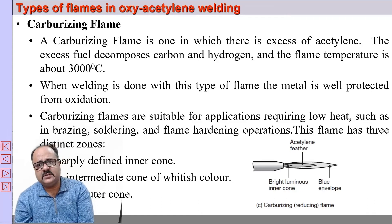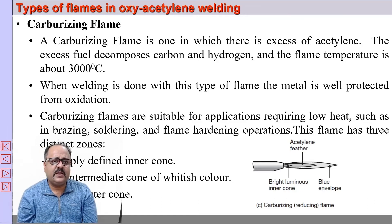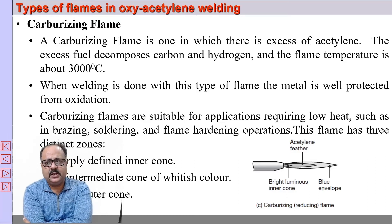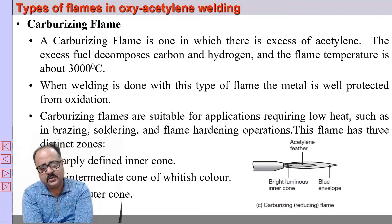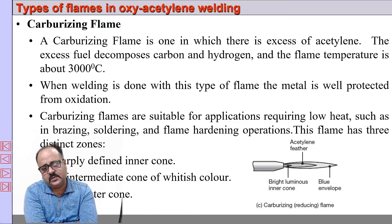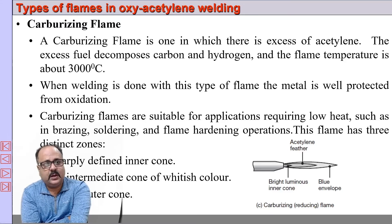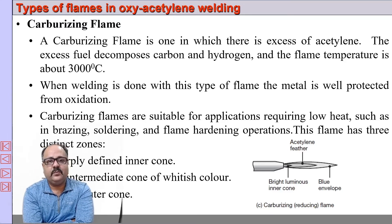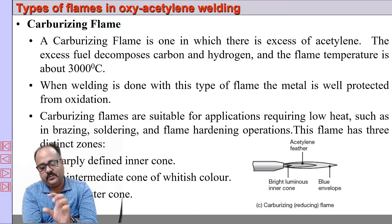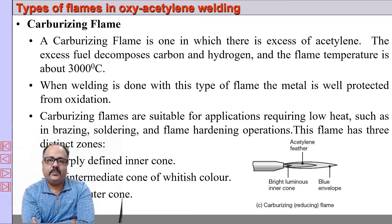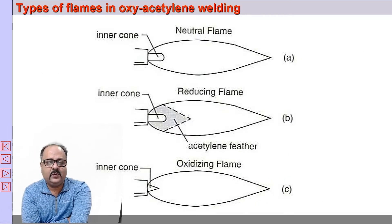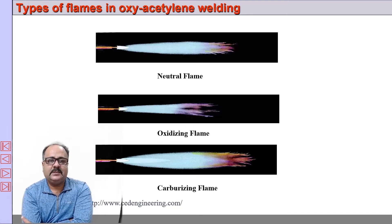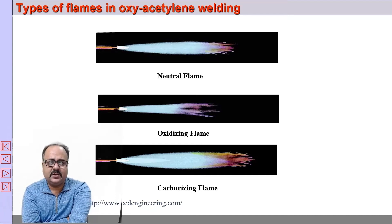If the acetylene percentage is more, the flame is called a carburizing flame. The temperature is around 3000 degrees centigrade, and this flame is suitable mainly for heating operations. It has three zones, unlike the other two: a sharply defined inner cone, an intermediate cone which is whitest in color, and a bluish outer cone. If you get a chance to use acetylene in practicals, it is very interesting to change the mixture percentage and observe the difference in flames. The applications are also different for the different flame types.